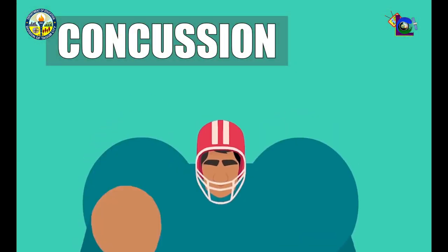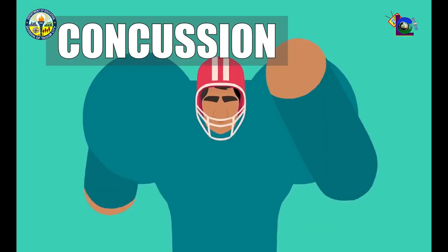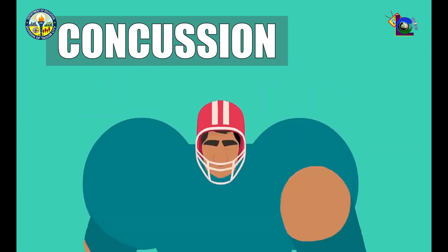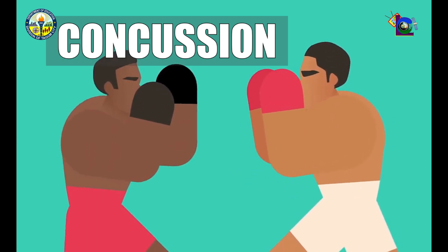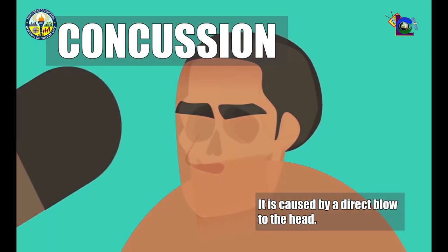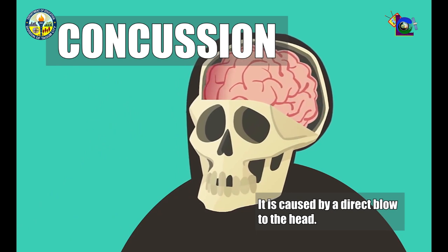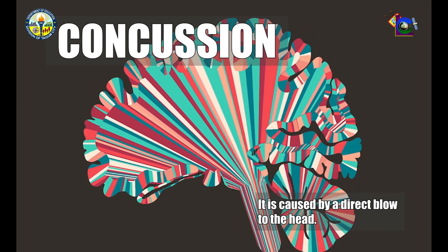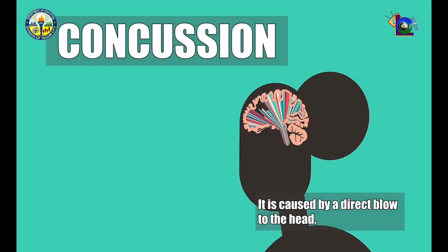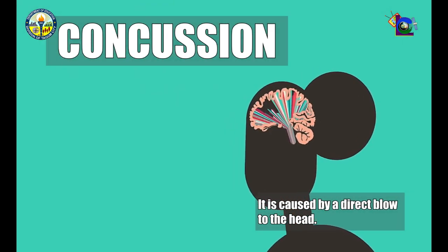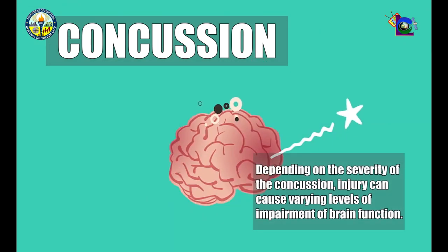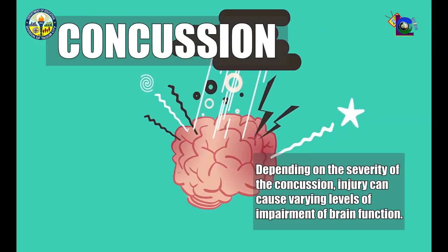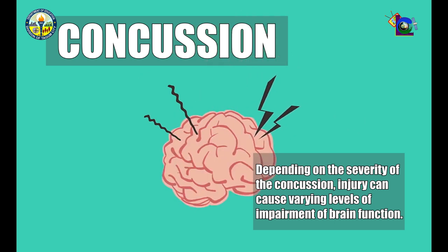Third is concussion. It is caused by a direct blow to the head. Depending on the severity of the concussion, injury can cause varying levels of impairment of brain function.